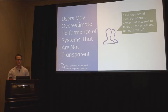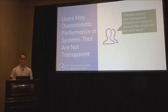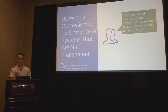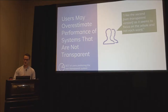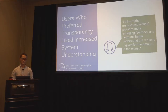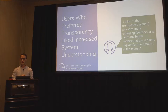Users also seemed to look at the non-transparent system and overestimate its performance. Even though they saw both systems, users attributed things like the non-transparent system taking into account context of the words — which it was not doing, it was a simple unigram model. One user said, 'I like the non-transparent version. It seems to focus on the whole and not each individual word.' But users who preferred transparency liked the increased system understanding. One said the transparent version provides more engaging feedback and helps better understand the reasons for the rating.